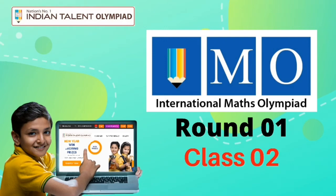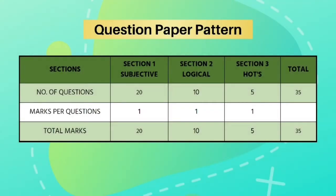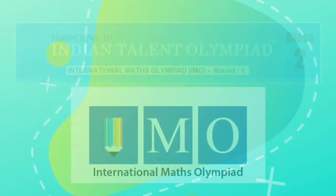Hello everyone, welcome to Indian Talent Olympiad. Today we will go through the round one question papers of ITO's International Maths Olympiad for class 2. The question paper consists of 35 questions, in which 20 questions are of subjective, 10 questions are of logical reasoning, and 5 questions are of high order thinking. These 35 question exam holds 35 marks. So let us begin.